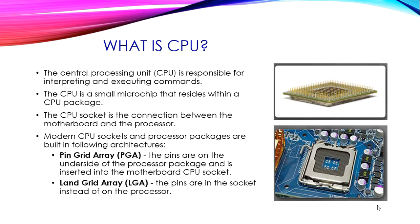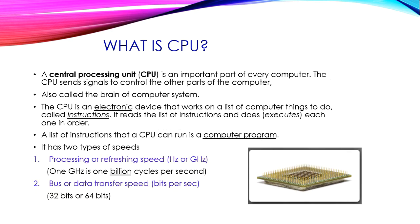The processor is used to process our data. The CPU sends signals to control all the other parts of your computer. It works on a list of instructions, reading and executing all functions one by one in order. A list of instructions that a CPU can run is called a computer program. The CPU has two types of speeds: processing speed, measured in Hz or GHz, and bus speed or data transfer speed, measured in bits per second. 1 GHz means 1 billion cycles per second.